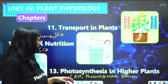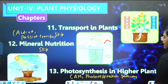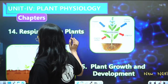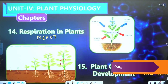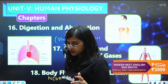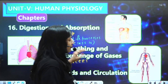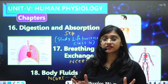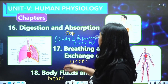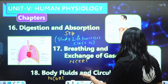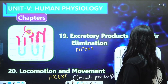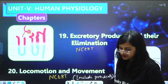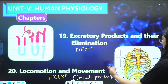Mineral Nutrition can be completely skipped. For Photosynthesis in Higher Plants, skip the chapter but look at the CAM and photorespiration pathways, as questions come from these. Respiration in Plants — any NCERT. Plant Growth and Development — any NCERT. Digestion and Absorption is to be skipped; instead, revise Life Processes from Class 10 for digestion and excretion. Breathing and Exchange of Gases — any NCERT. Body Fluids and Circulation — any NCERT. Excretory Products and Elimination — any NCERT.